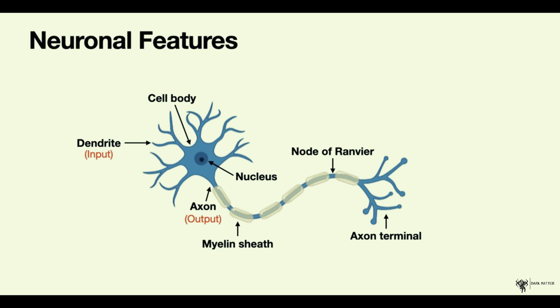The axon that extends from the cell body is the part that the neuron will send its impulses through. So the axon is thought to be the output of the neuron.